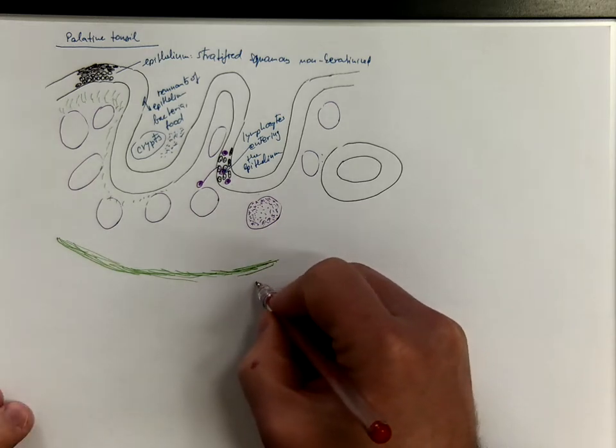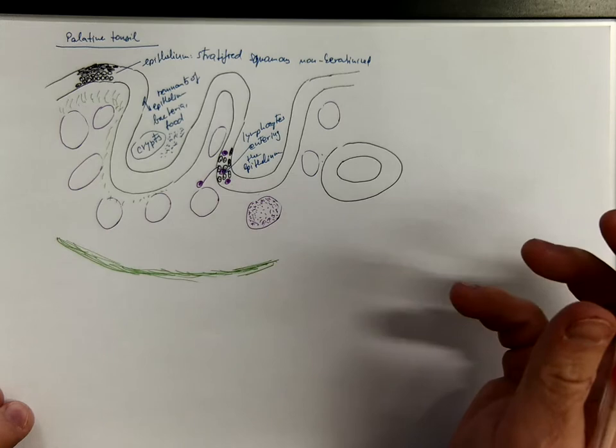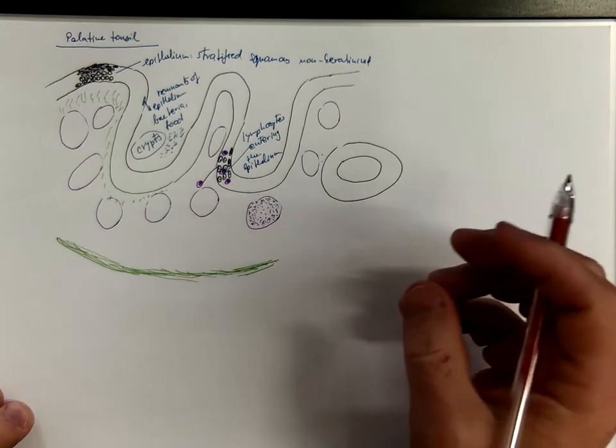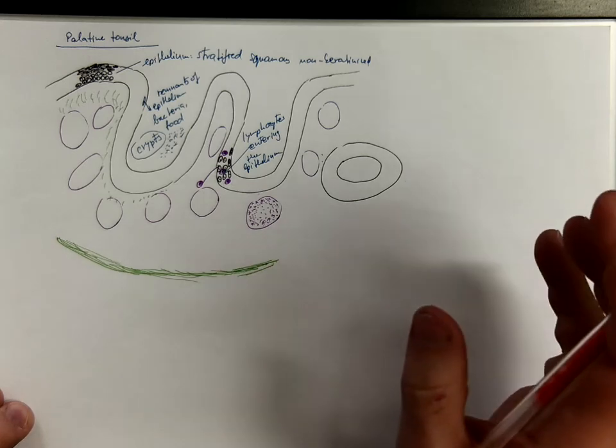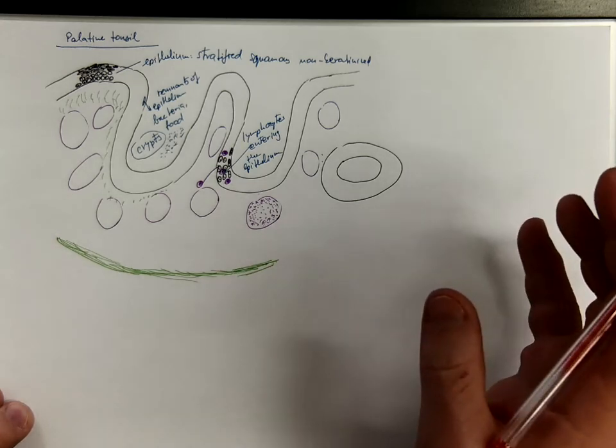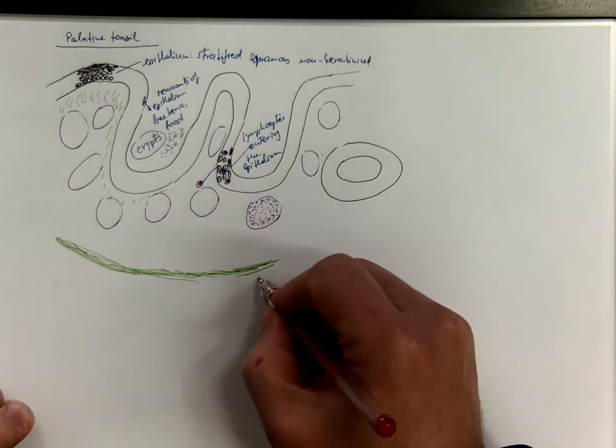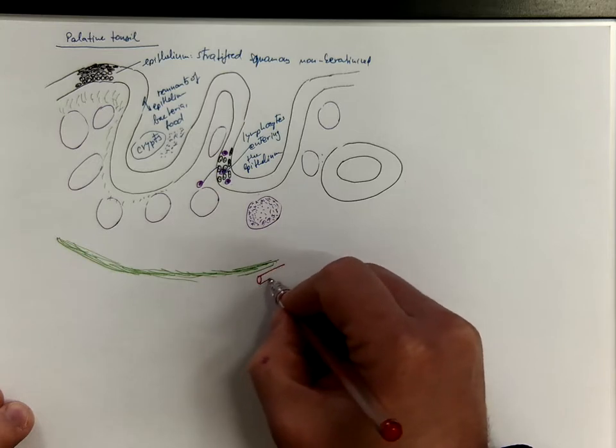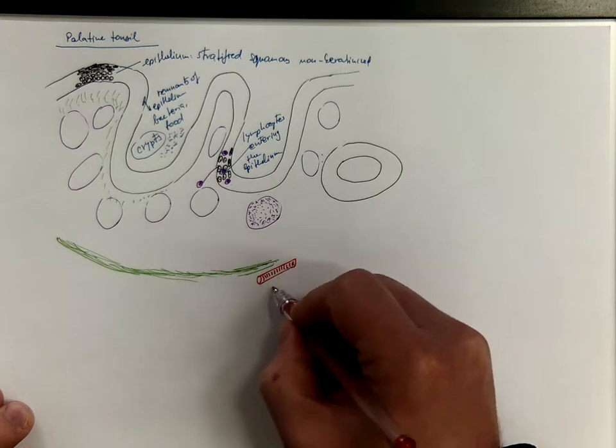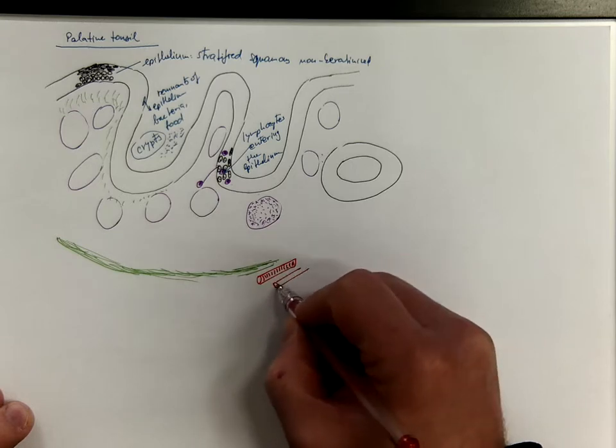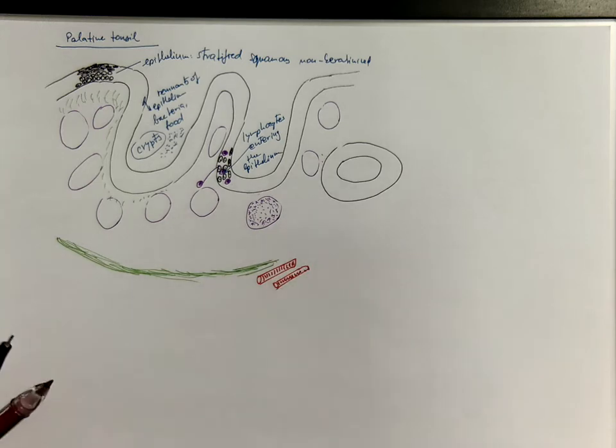Outside the palatine tonsil you can find some skeletal muscle fibers. Usually they belong to the palatopharyngeal or palatoglossal muscles. That are surrounding the tonsillar fossa, which is the anatomical space where you can find the palatine tonsil.